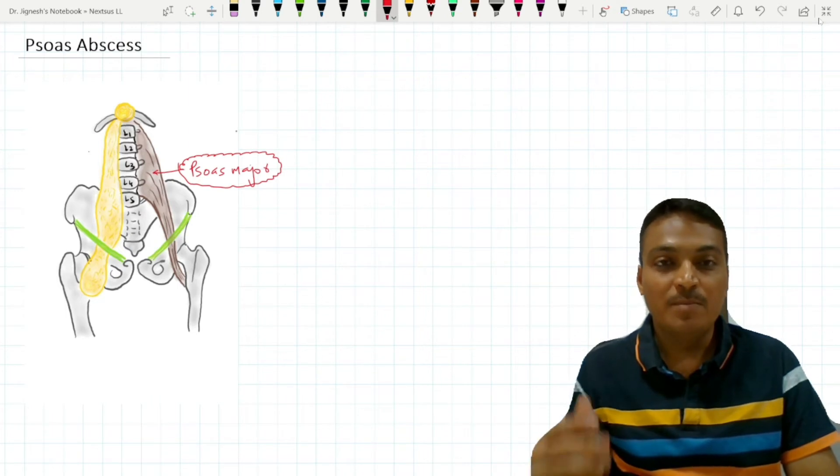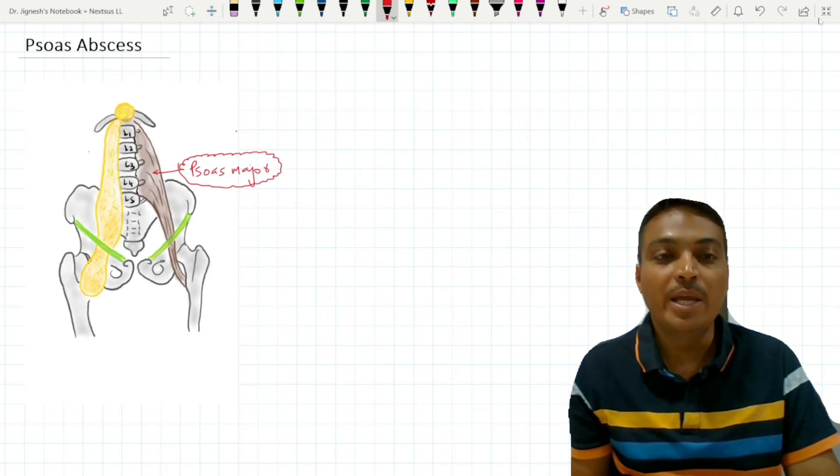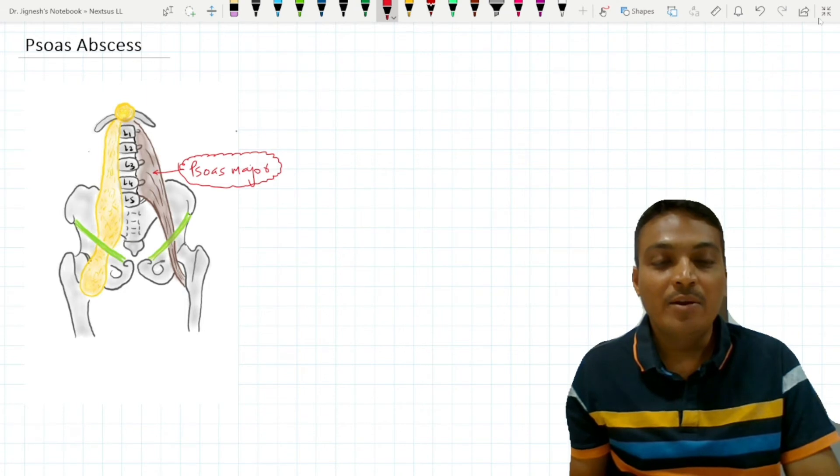So any pus which is present within the posterior mediastinum, mostly because of tuberculous infection of the T12 vertebrae, may travel through the psoas major muscle and reach up to the femoral triangle.